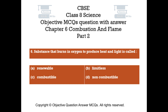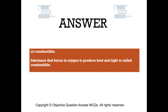Question number 6. A substance that burns in oxygen to produce heat and light is called: Option A, renewable. Option B, limitless. Option C, combustible. Option D, non-combustible. The right answer is Option C. A substance that burns in oxygen to produce heat and light is called combustible.